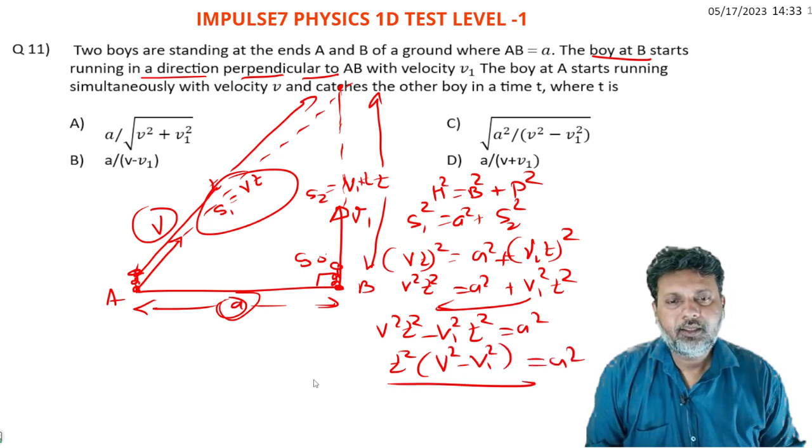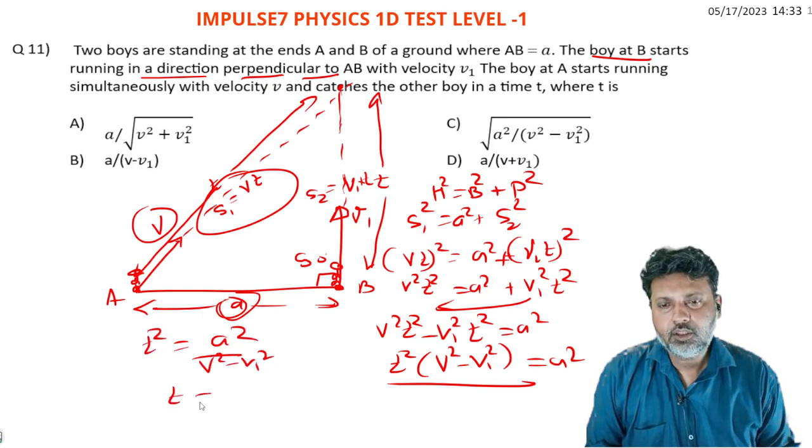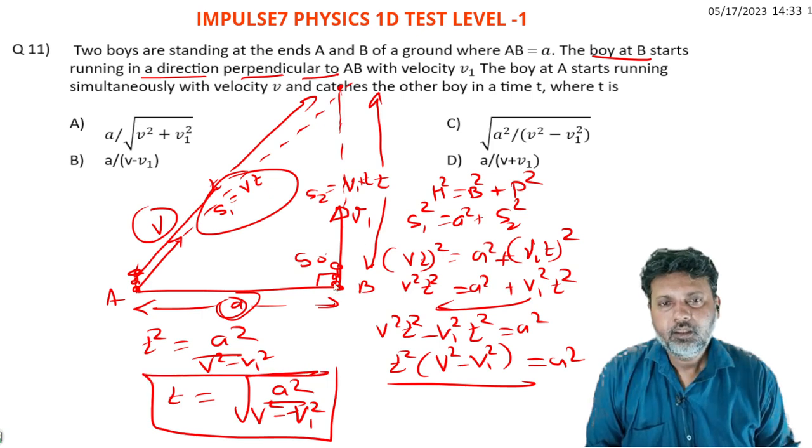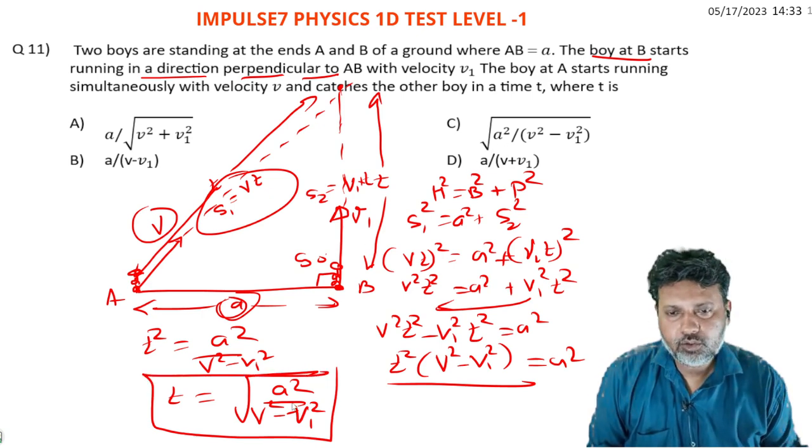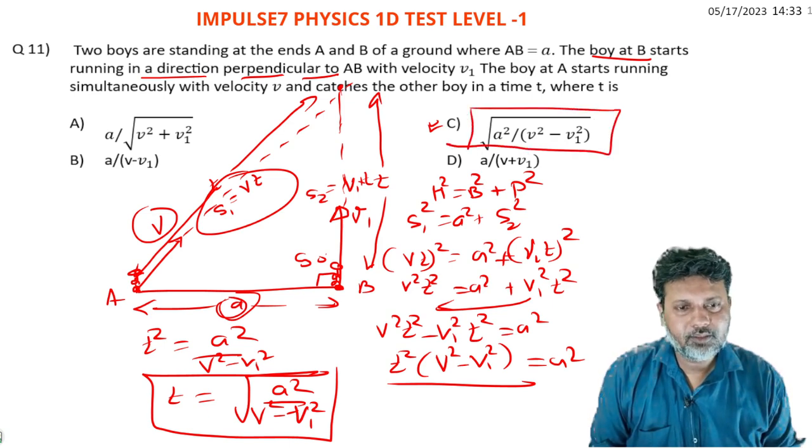Therefore, t squared equals a squared divided by (v squared minus v1 squared). Taking the square root: t equals a divided by the square root of (v squared minus v1 squared). Looking at the options, option D is the correct option. Next question.